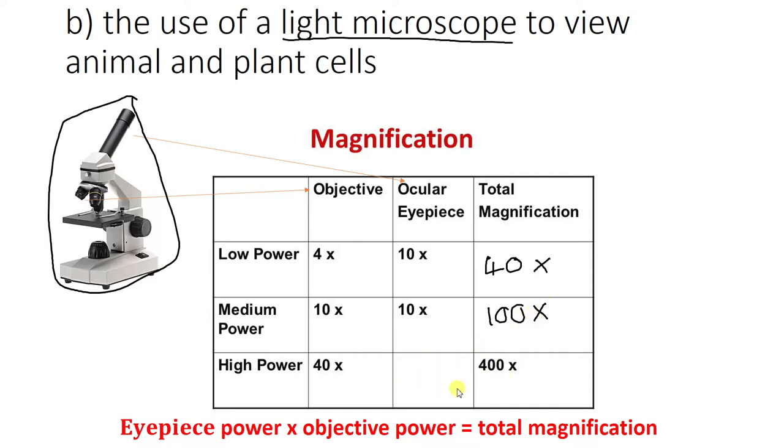Flipping around the equation a bit at the bottom then, we've got total magnification and we've got our objective. Now, to be fair, I've made it easy for myself because I already know what the answer is going to be. But the way you would do this just to rearrange the equation would be 400 divided by 40, which lo and behold is going to be 10. So I'd have 10 there. Brilliant.